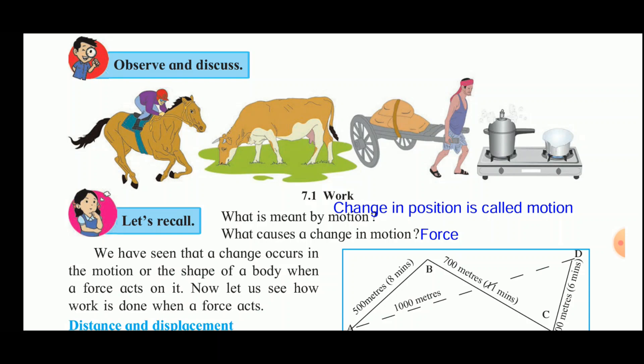Let us recall what is meant by motion. The change in position of an object is called motion. What causes the change in motion? Force causes a change in motion. Unless and until the force acts on an object, the object cannot move. Thus a change occurs in the motion or the shape of a body when a force acts on it. Now let us see how work is done when a force acts.